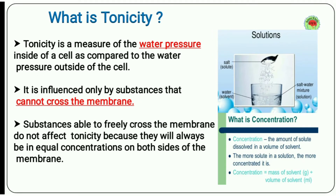What is tonicity? Tonicity is a measure of the water pressure inside of a cell as compared to the water pressure outside of the cell. So tonicity is just a measurement of water pressure — how much water pressure is inside the cell compared to outside. It is influenced only by substances that cannot cross the membrane, that is the solute.